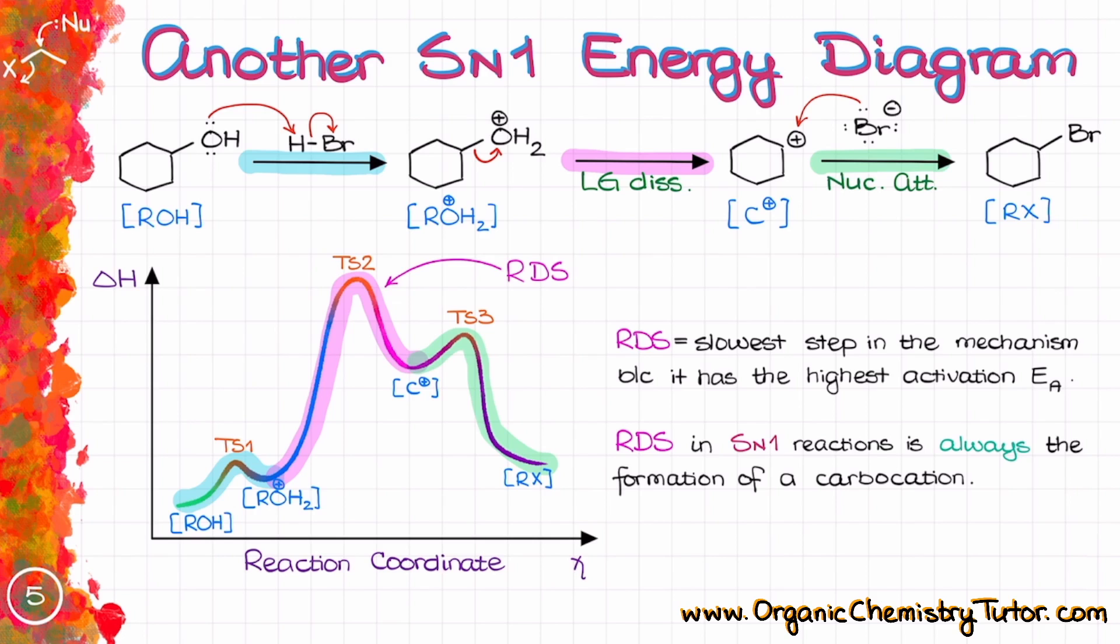And in this case, the rate determining step, the slowest step in our reaction, is actually the second step in our mechanism. So it's not the order of step that really matters here for SN1 reactions or any other reaction in general, but rather what happens in those steps.